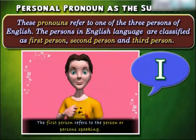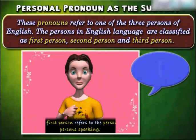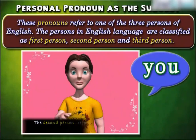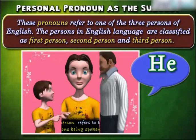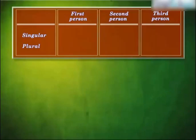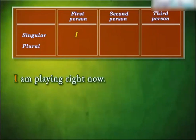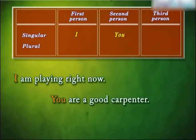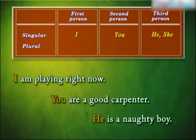The first person form of pronoun is 'I', the second person form is 'you', and the third person form is 'he'. For example: 'I am playing right now' — here the first person singular pronoun 'I' is used, referring to the person who is speaking. 'You are a good carpenter' — here the second person singular pronoun 'you' is used, representing the person being spoken to. 'He is a naughty boy' — here the third person singular pronoun 'he' is used, representing the person being spoken of.